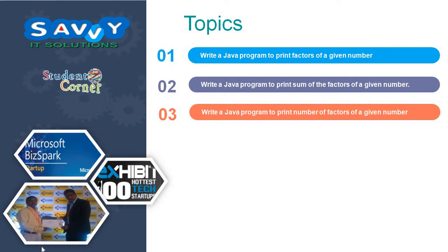Today we are discussing about 3 programs: write a Java program to print factors of a given number, write a Java program to print the sum of the factors of a given number, and write a Java program to print the number of factors of a given number. These three are helpful for writing the prime number program and perfect number program in the next sessions.